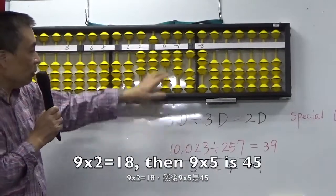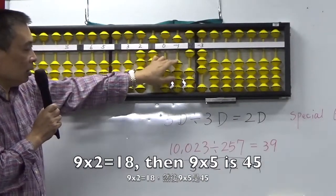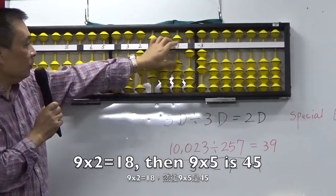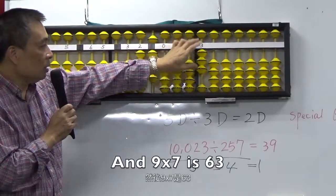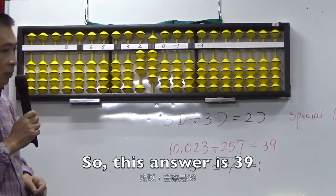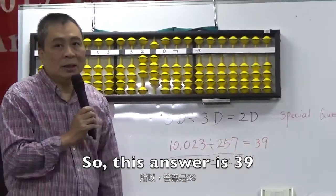9 to 18. Then, 9, 5 is 45. And then, 9, 7 is 63. So, this answer is 39.